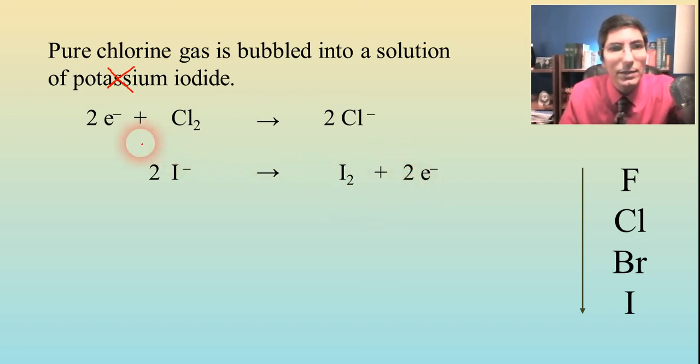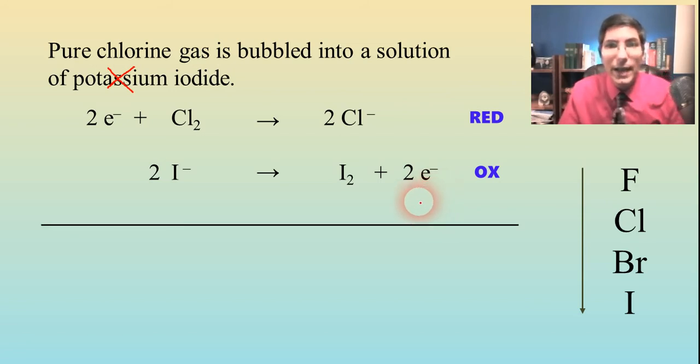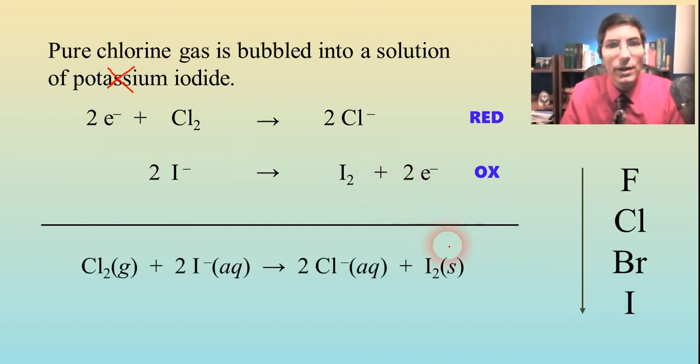And then in the next half reaction, I've got negative two on the left side compared to zero on the right side. So to make everything equal, I need to put two electrons on the product side. So it looks like chlorine's gaining electrons. So that is reduction. And iodide is actually losing electrons. So that is oxidation. Well, now when it's time to add these together, we can see that we have two electrons on both sides. So they're going to fall out very easily. And so there's our overall balanced equation.